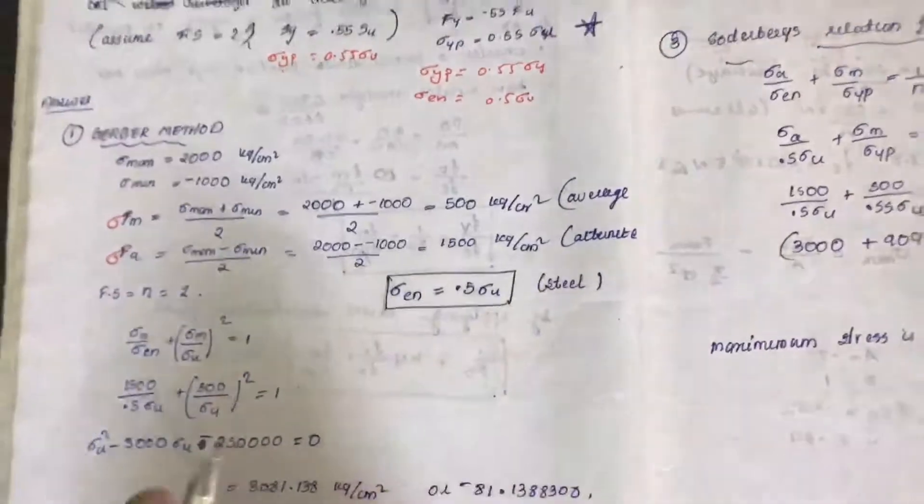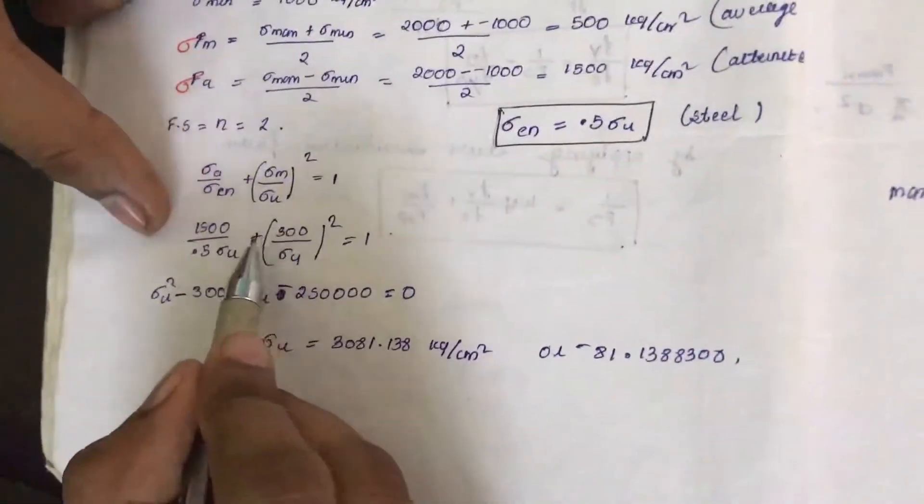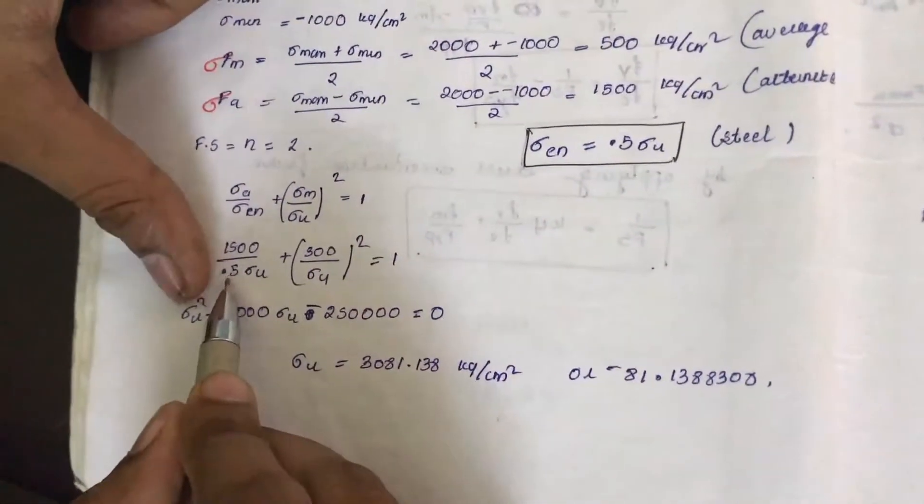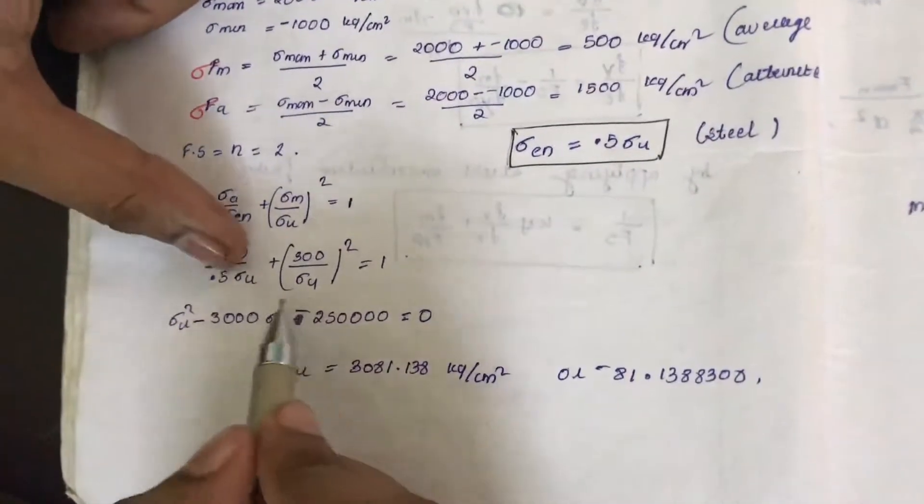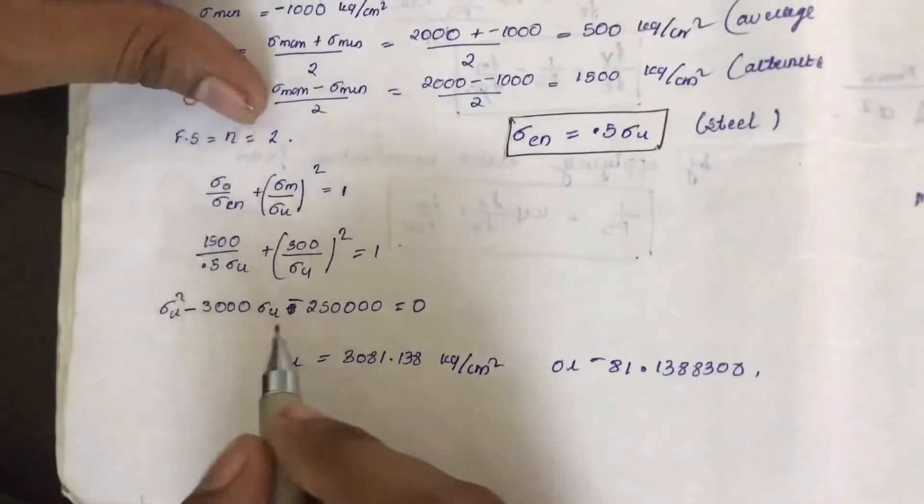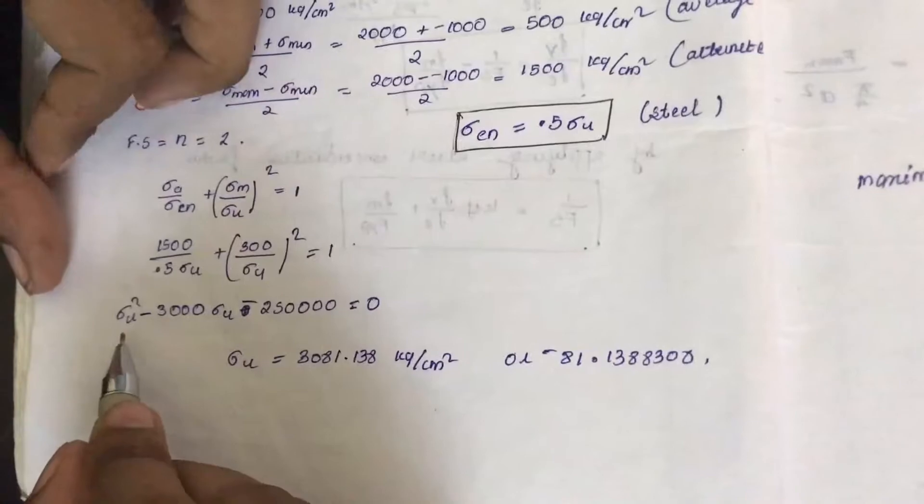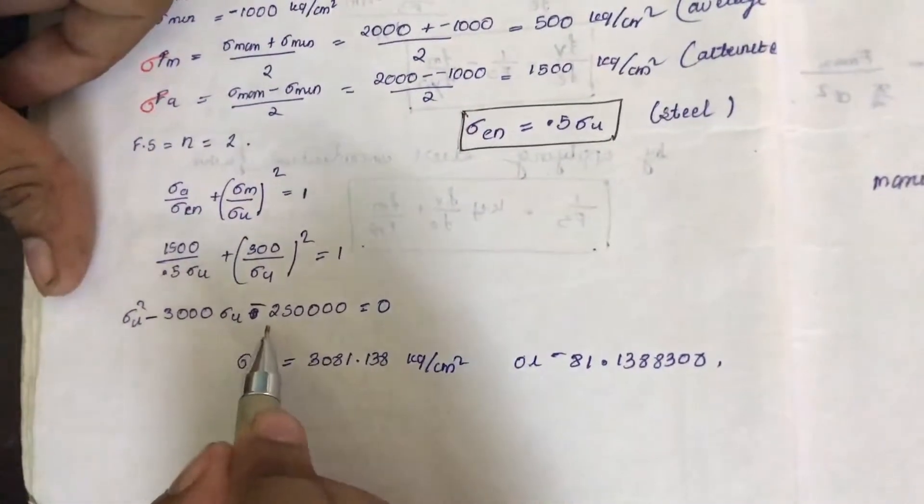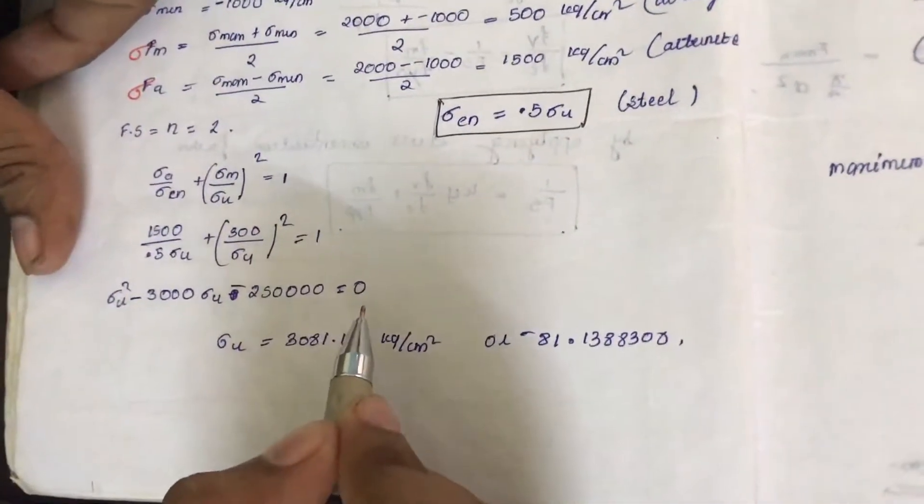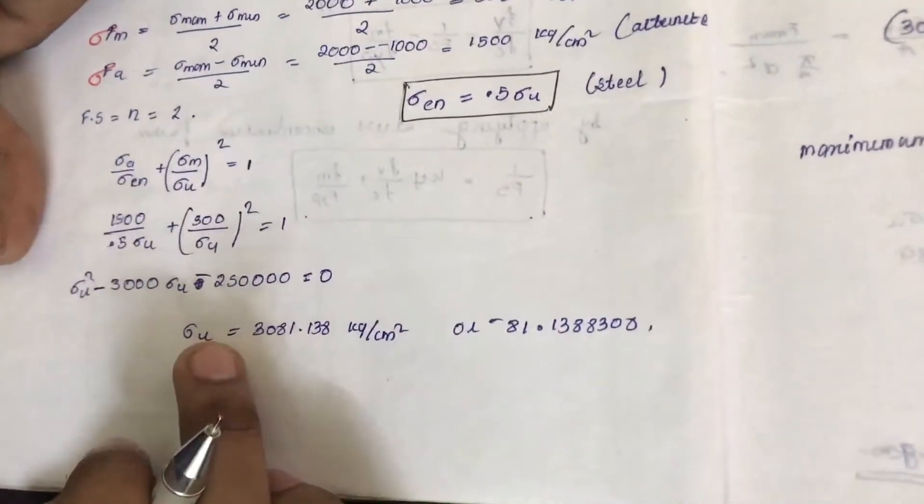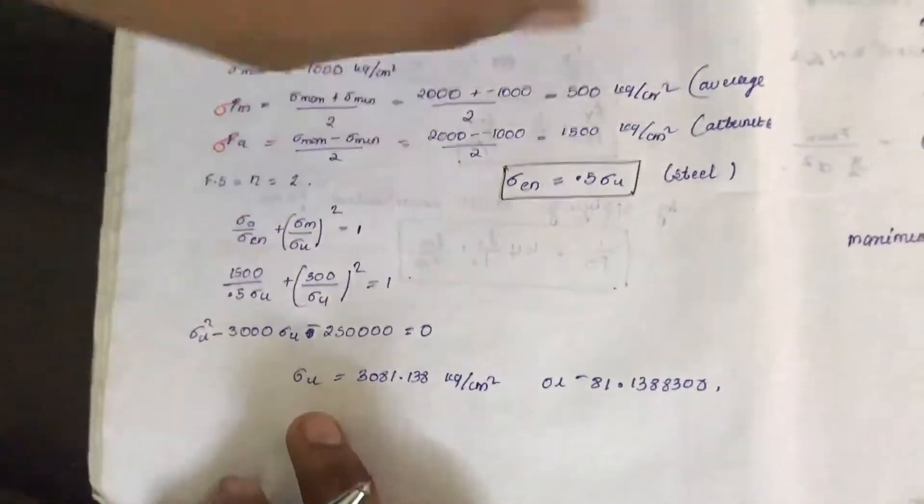That means we will substitute everything in the formula. So we have sigma a, sigma m, 0.5 sigma u, sigma u. Now we will be taking the LCM and at last we will get sigma u square minus 3000 sigma u minus 250,000 equals 0. From which we can solve for sigma u. This is Gerber method.